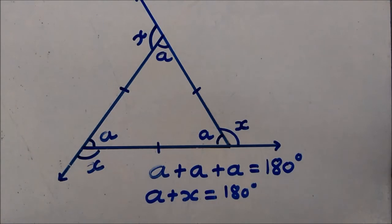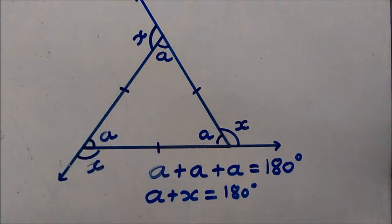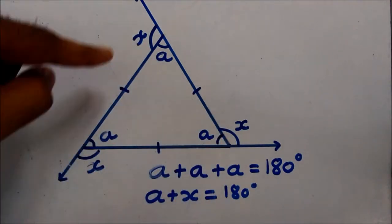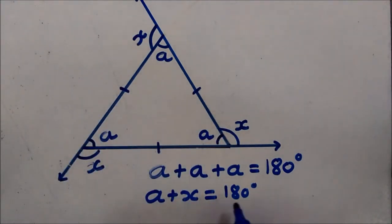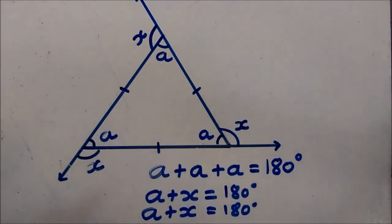So how many linear pairs we have here? One, two, and three. So three times, and all the linear pairs have the same measure. A plus x one time, a plus x two times, that is the second pair, and let's take the third pair also.